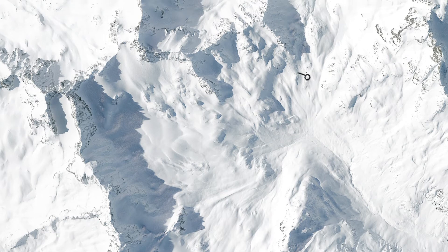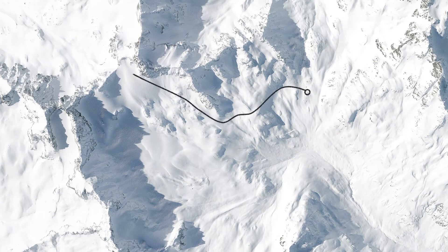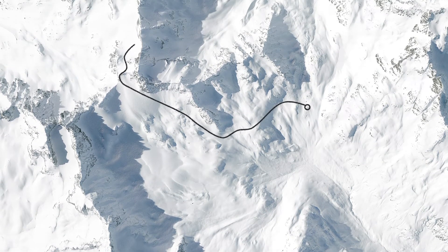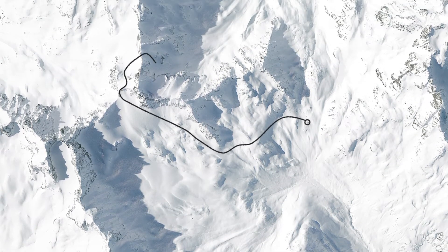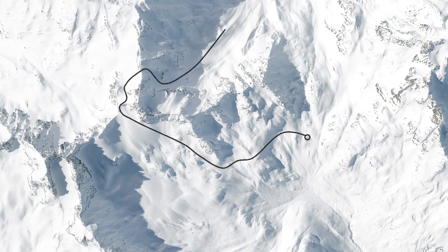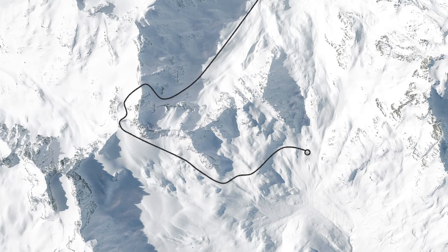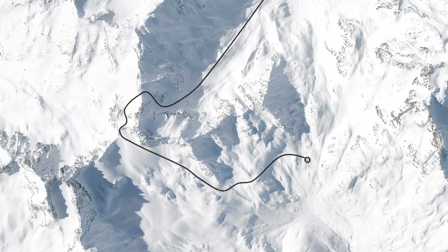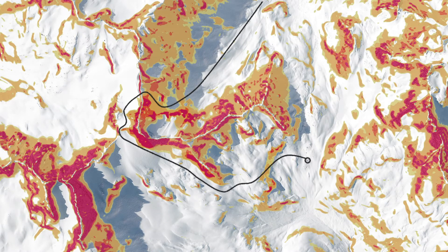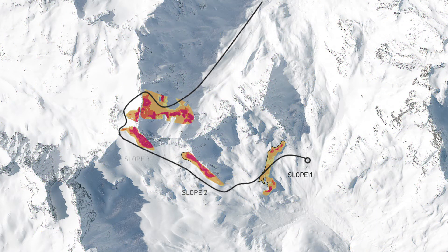What is the 30-degree method? In the 30-degree method, all of the slopes that lie along the route are analyzed. If the slope steepness is above 30 degrees and the slope is above the route or directly on the route, it is a potential crux.